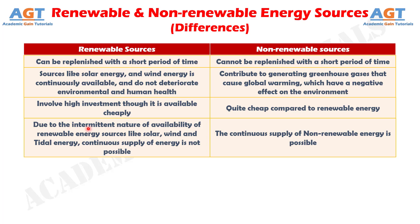Number 4: Due to the intermittent nature of availability of renewable energy sources like solar, wind, and tidal energy, continuous supply of energy is not possible, whereas the continuous supply of non-renewable energy is possible.